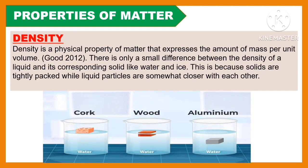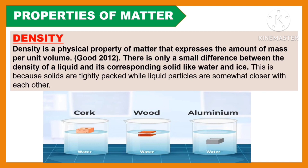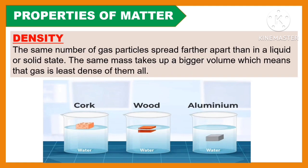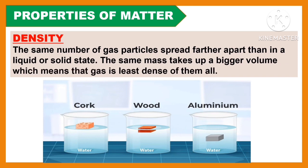Another property of matter is density. Density is the physical property of matter that expresses the amount of mass per unit volume. There is only a small difference between the density of a liquid and its corresponding solid, like water and ice, because solids are tightly packed while liquid particles are somewhat closer to each other. The same number of gas particles spread farther apart than in a liquid or solid state, meaning the same mass takes up a bigger volume — so gas is the least dense of all.